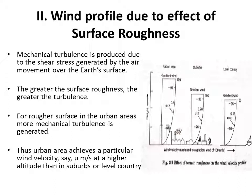For rougher surfaces in urban areas, more mechanical turbulence is generated. Thus, as you can see from the graph, an urban area achieves a particular velocity — say 3 meters per second — at a higher altitude than in suburbs or level country.